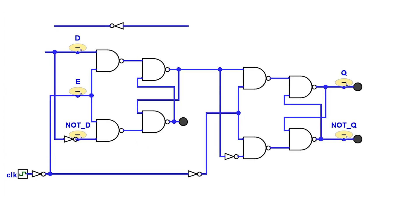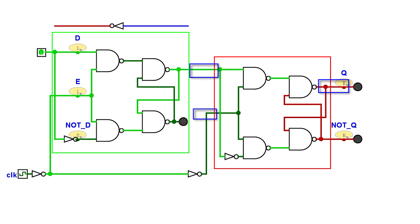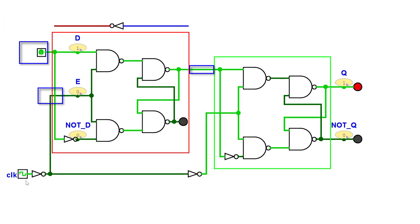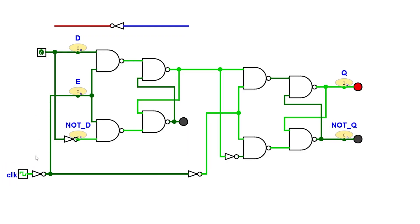To solve this problem, we chain another gated D latch whose input is the output of the first gated D latch. We negate the clock signal — the first one receives this negated clock signal, the second one receives the clock signal negated again, which is the original signal. When the clock signal is low, the first latch is enabled and is in set-reset mode; its output changes as the input changes. But the second latch is in hold mode since clock input is low, so even if its input is changing, its output does not change. At the moment when the clock signal rises from low to high, the first latch enters hold mode, holding the last detected input value.